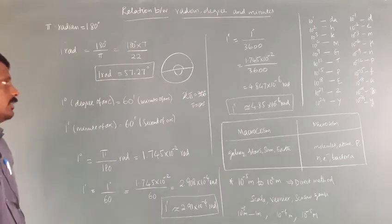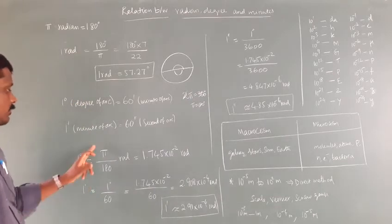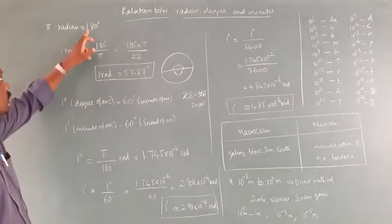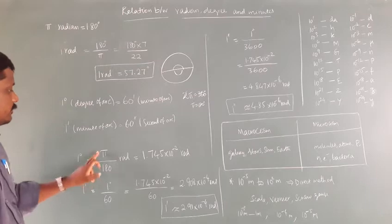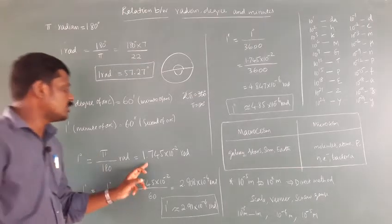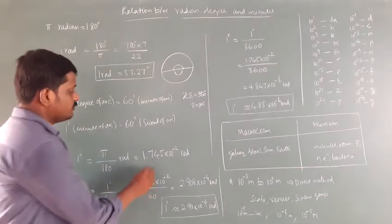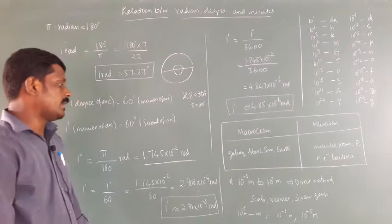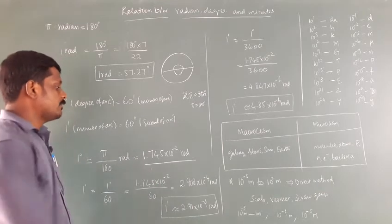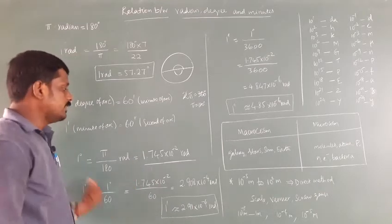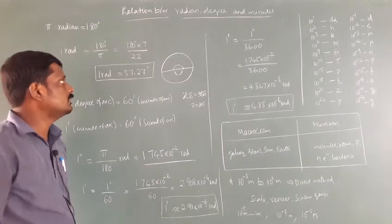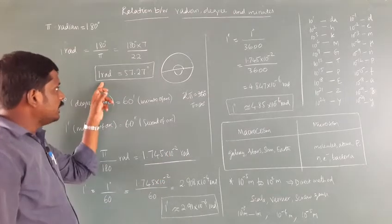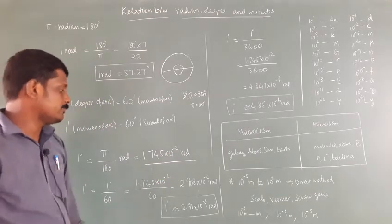1 degree is equal to π by 180, since 180 degrees is equal to π radians. Substituting, you will get 1 degree equal to 1.745 × 10⁻² radians. So they may ask in one mark questions: 1 degree equal to 10⁻² radians, and 1 radian equal to 57.27 degrees.